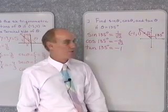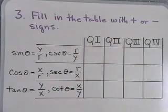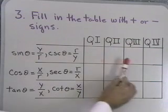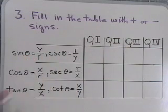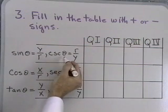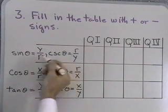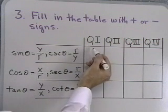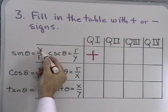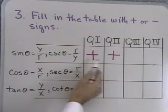Next, I want to look at the algebraic signs — positive and negative — of the trigonometric functions. I've written a table with quadrants 1, 2, 3, and 4. For sine θ and cosecant θ, since both involve y and r, and r is always positive, the sign depends on the y-coordinate. In quadrant 1, y is positive and r is positive, so the ratio is positive. In quadrant 2, y is also positive, so the ratio is positive.